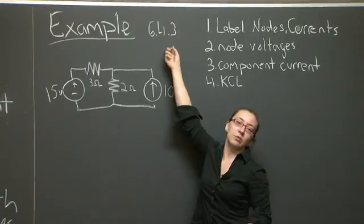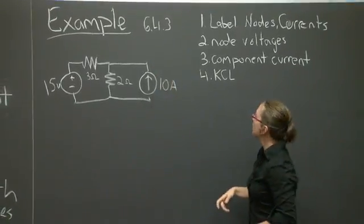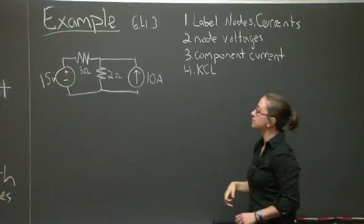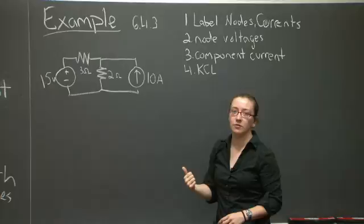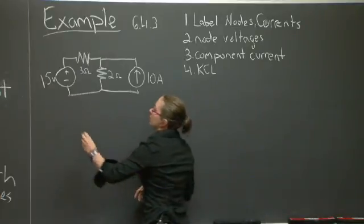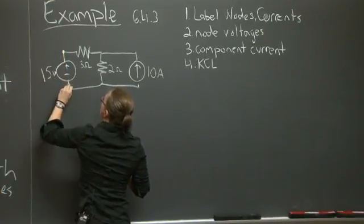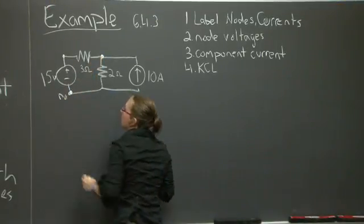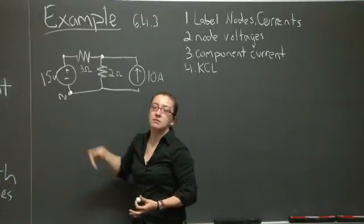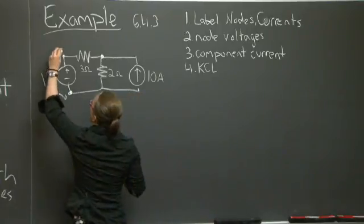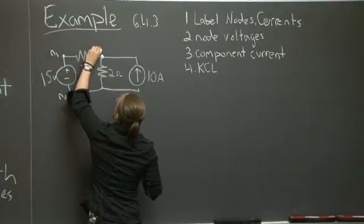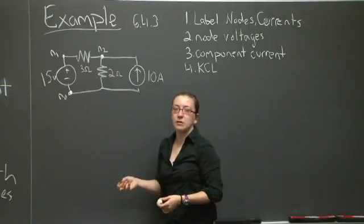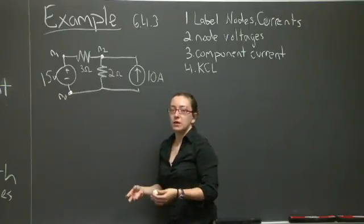You can find this example repeated in 6.4.3 of the readings. And I'm going to walk through these directions. So the first thing I'm going to do is label my nodes and my currents. People interchangeably use E or N. It doesn't really matter. I guess N in particular could refer to the node, while E in particular could refer to the voltage associated with that node.